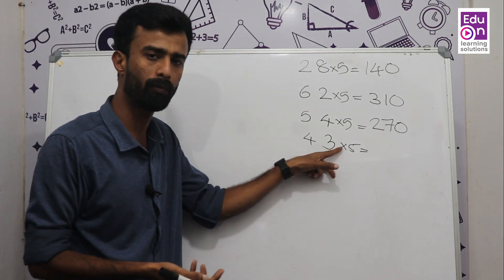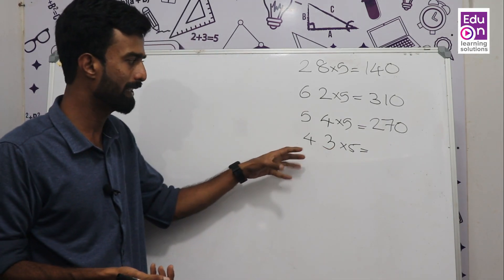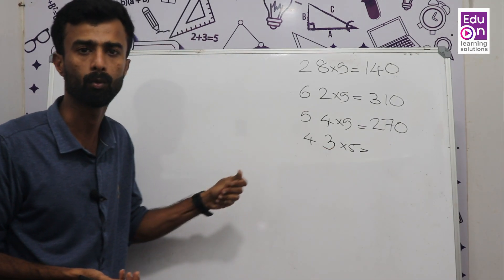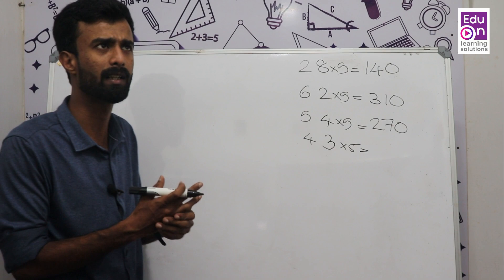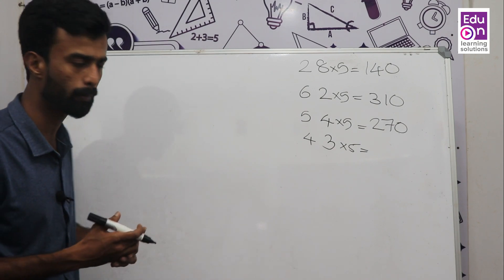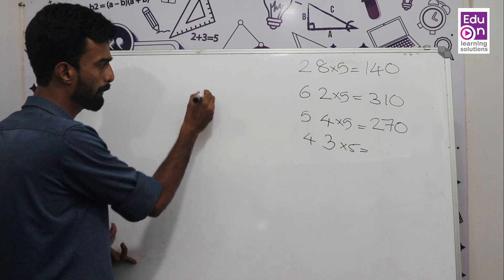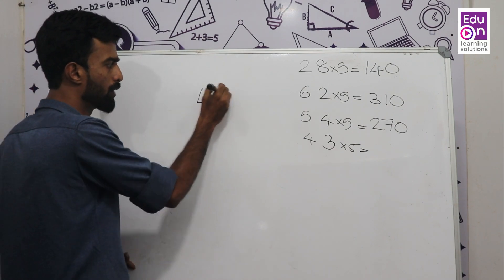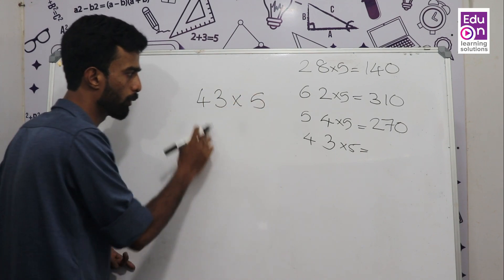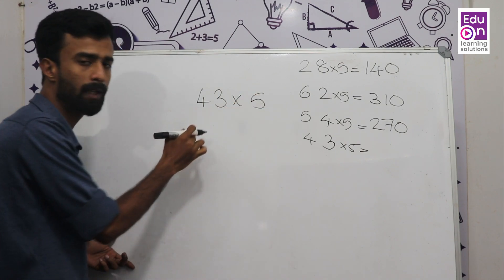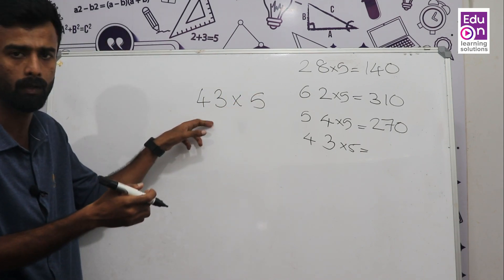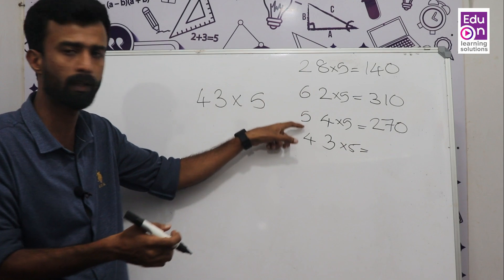Now let's look at 43 × 5. This is a point case. We have a shortcut method for 43 × 5 as well. Notice that 43 is not an even number — these are all odd numbers.